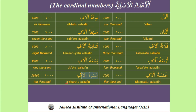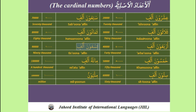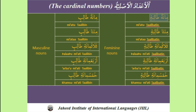10,000. 20,000. 30,000. 40,000. 50,000. 60,000. 70,000. 80,000. 90,000. 100,000.